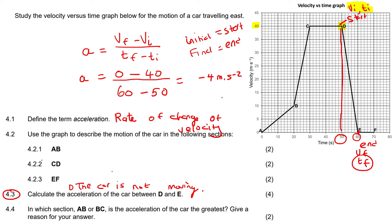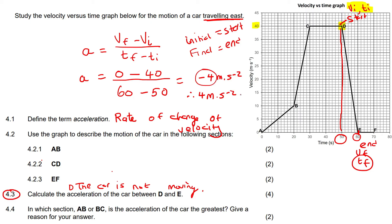But they told us the car was originally moving east, and all the values are positive, so the car was definitely going east. Because east is positive but we got a negative answer, we say the acceleration is 4 meters per second squared west — because west is the opposite of east.